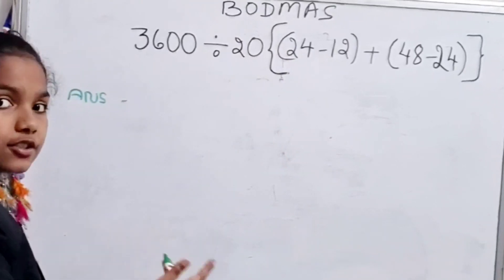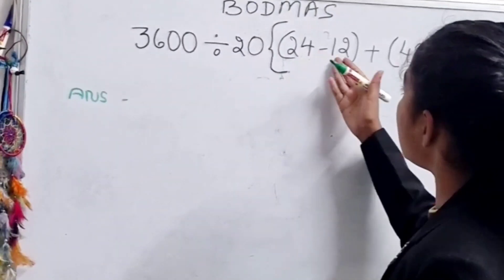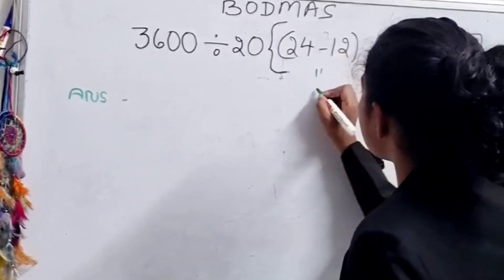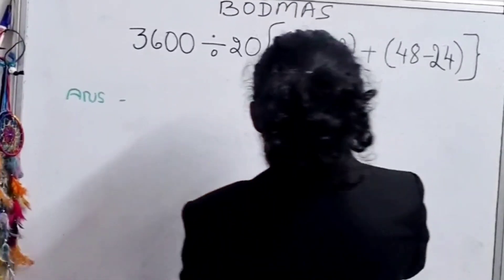B is for brackets. Now we will solve what is in the brackets. Now 24 minus 12 equals 12. Sorry, okay.